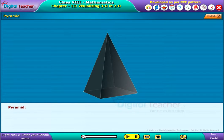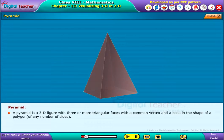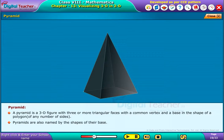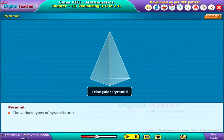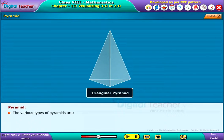Pyramid: A pyramid is a 3D figure with three or more triangular faces with a common vertex and a base in the shape of a polygon of any number of sides. Pyramids are also named by the shapes of their base. The various types of pyramids are: